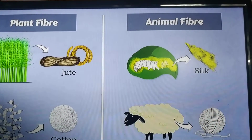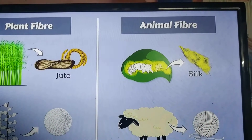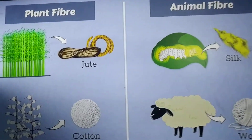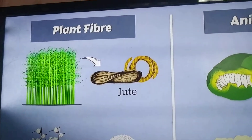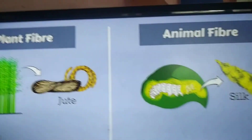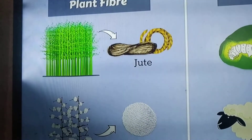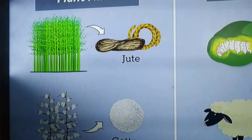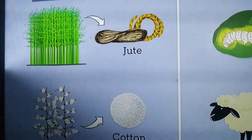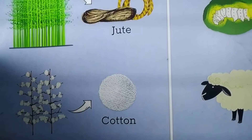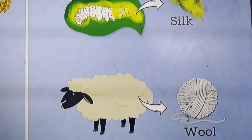Do you know from where we get all these clothes? How the clothes are prepared? There are 4 kinds you might have watched: plant fiber and animal fiber. In plant fiber, there are 2 kinds mentioned here — one is jute, another one is cotton. Here in animal fiber, silk and wool.